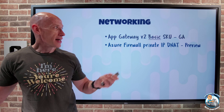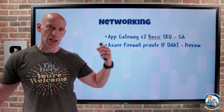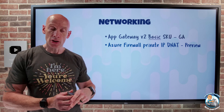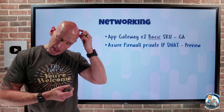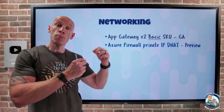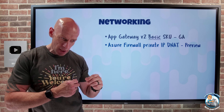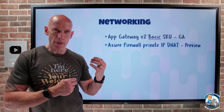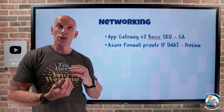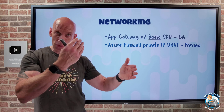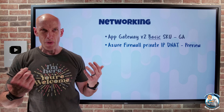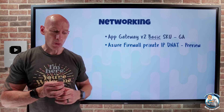Azure Firewall now has private IP DNAT — destination network address translation — in preview. Ordinarily we have this on the public IP of Azure Firewall, primarily for incoming traffic. What this enables is IP port translation on the Azure Firewall's private IP address. This is really useful in scenarios like overlapping IP networks that wouldn't ordinarily be able to talk to each other, or completely non-routable networks, maybe with a VPN in the middle. Azure Firewall can help facilitate communication in those cases.